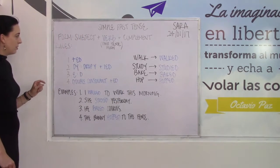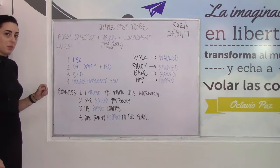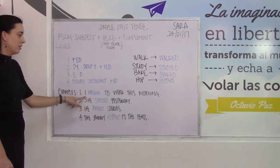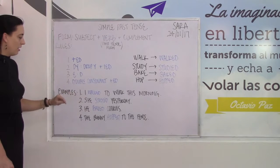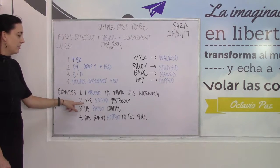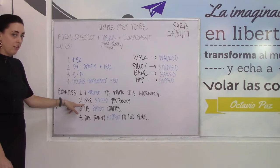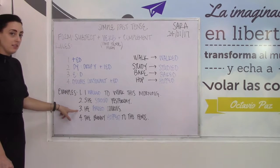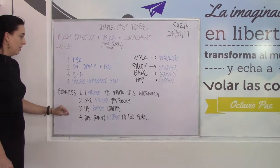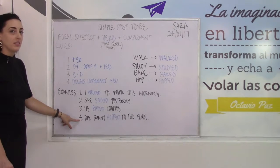Some examples of using simple past tense: I walked to work this morning. She studied yesterday. He baked cookies. And the bunny hopped to the fence.